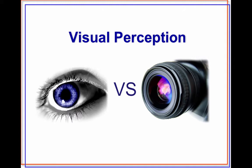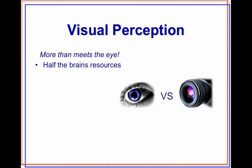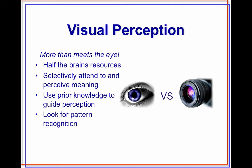First we're going to talk about visual perception. The eyes see differently than a camera sees, and it's more than meets the eye. An eye uses half the brain's resources to operate. We selectively attend to and perceive meaning, not just based on what we see, but we use prior knowledge to guide our perception. We look for pattern recognition, and we create visual analogies. It's our brains that see, not our eyes.